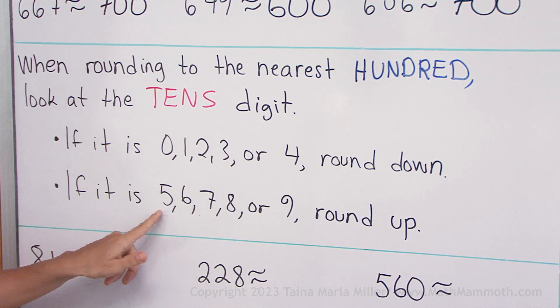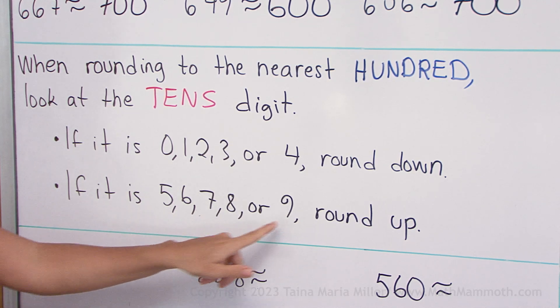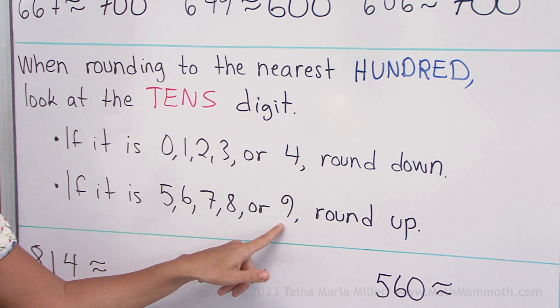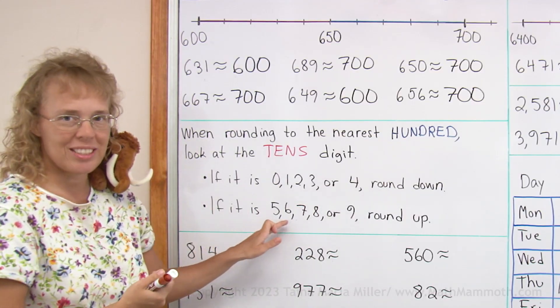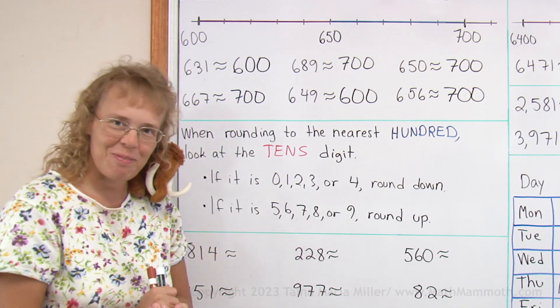And then if you have 5 tens, or 6 tens, or 7, or 8, or 9 tens, you round up. Because that means that the number has 50 something, 60, 70, 80, or 90.